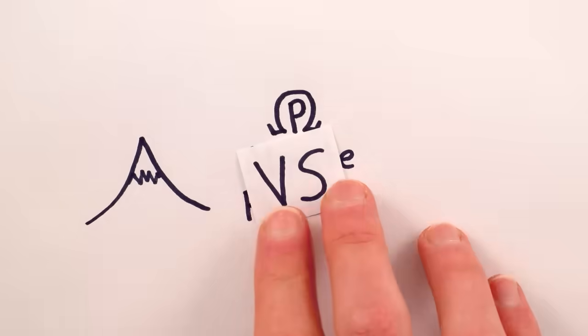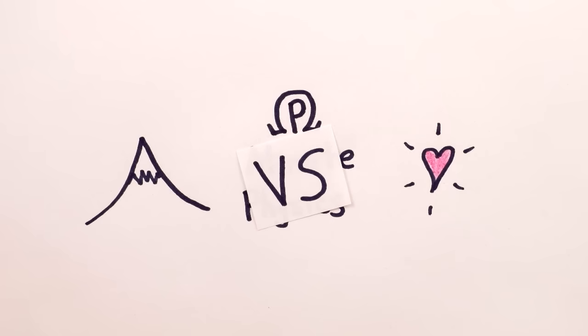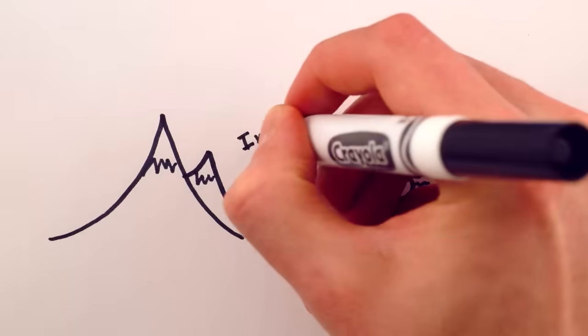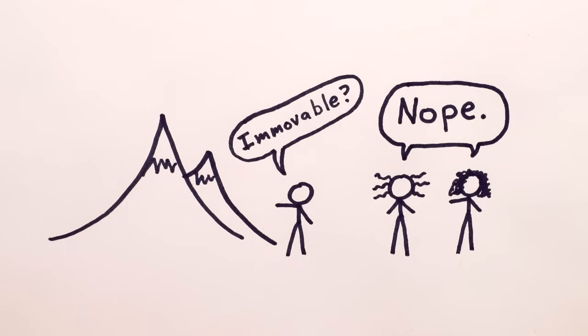What happens if an immovable object meets an unstoppable force is a popular question on the internet. Of course, relativity clearly tells us that there is no such thing as an immovable object. Here's why.